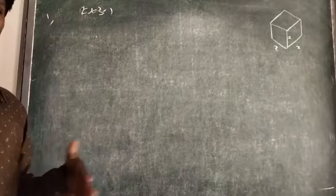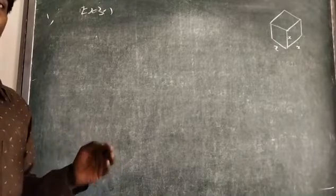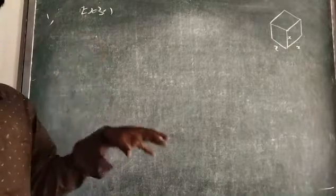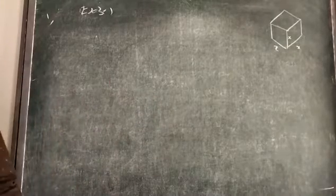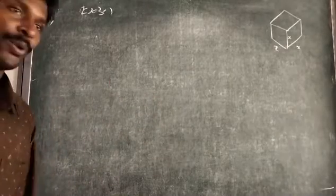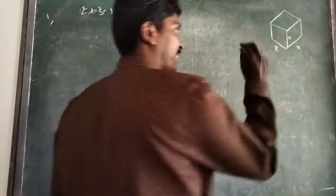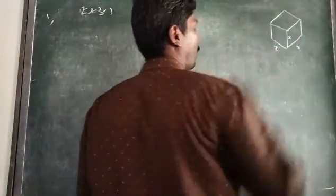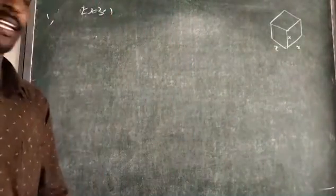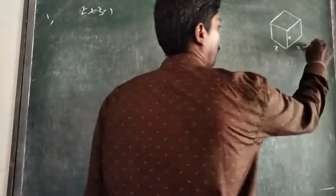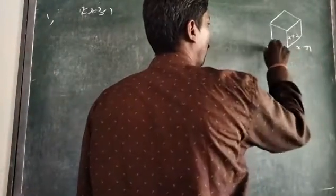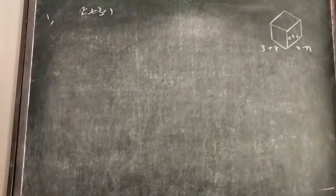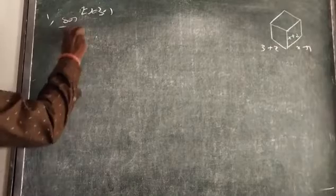So, we already have the volume of the cube along with 52 cubic units increasing — then what is the volume of the cuboid? For example, if the side is x, and we are increasing the three sides: x plus one, one side increasing one, one side increasing two, one side increasing three — then the cube becomes a cuboid.